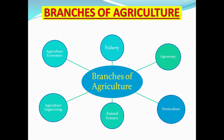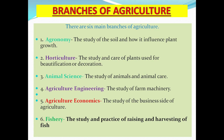Branches of agriculture means that agriculture is divided into different sections or subsections. There are six branches of agriculture that we are required to know. They don't come in any specific order. The six branches are: agronomy, horticulture, animal science, agricultural engineering, agricultural economics, and fishery.